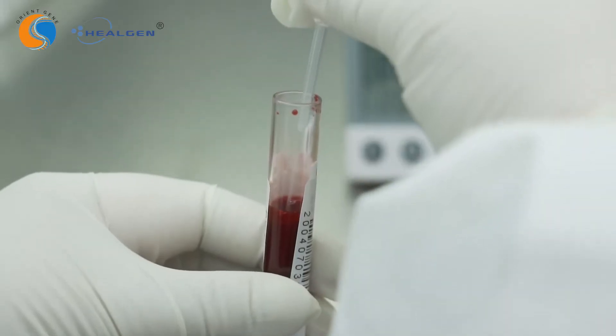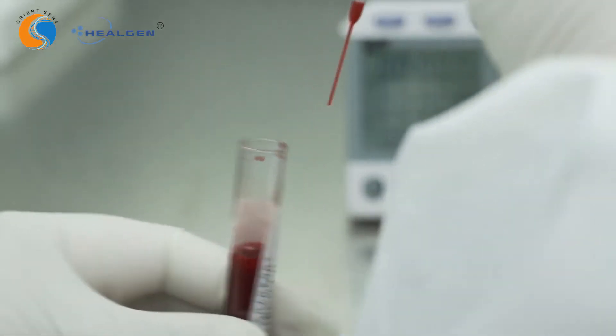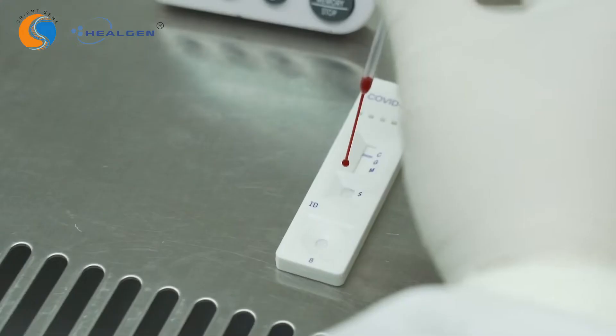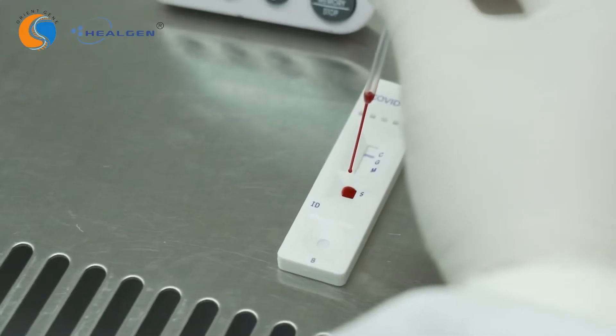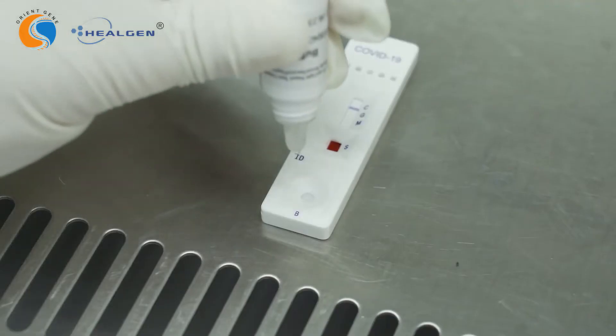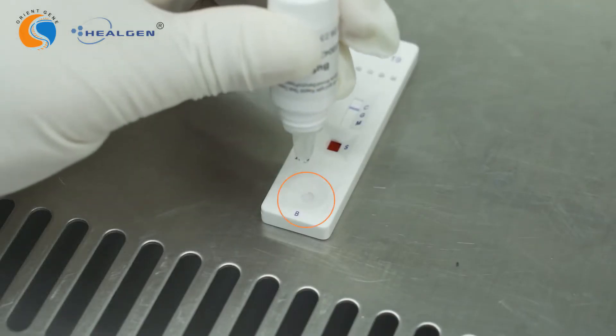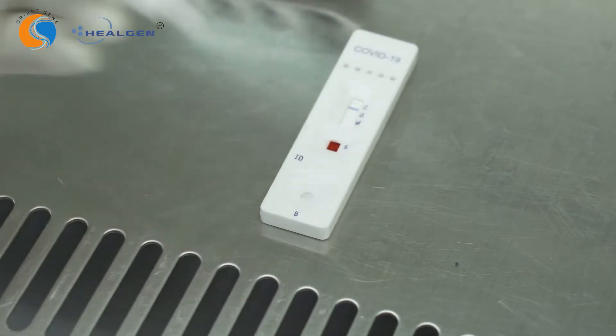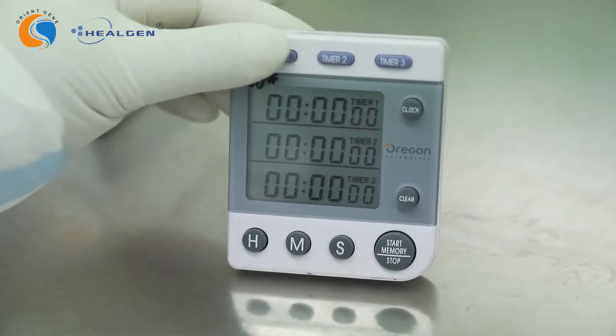For whole blood specimen, draw the specimen into the dropper. Hold the dropper vertically and transfer one drop of whole blood to the sample well. Then add two drops of buffer to the buffer well, immediately after. Start the timer.